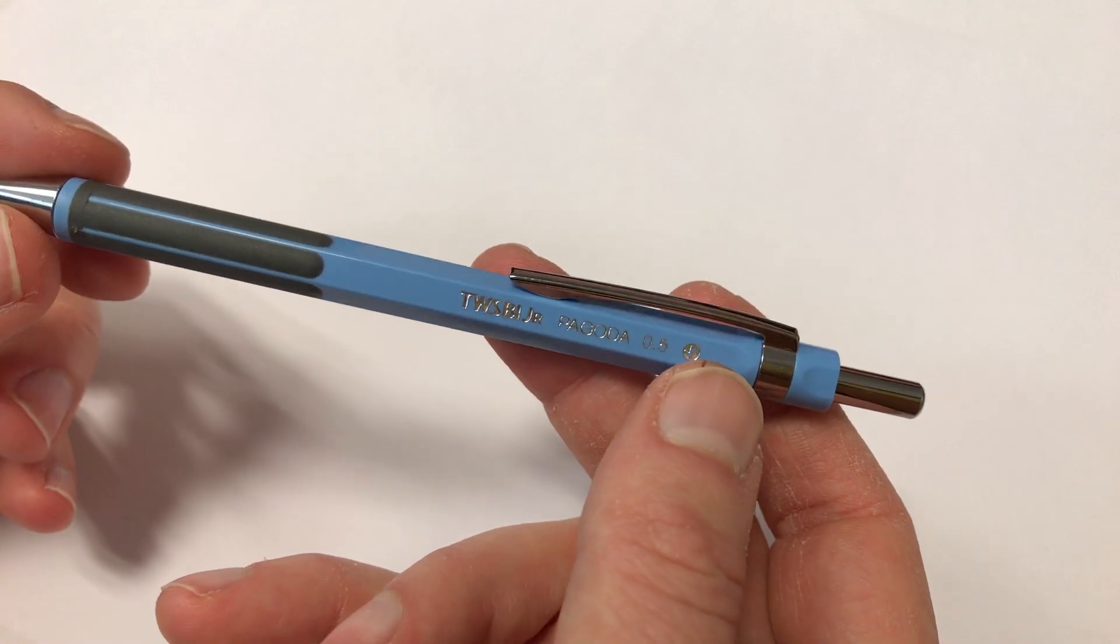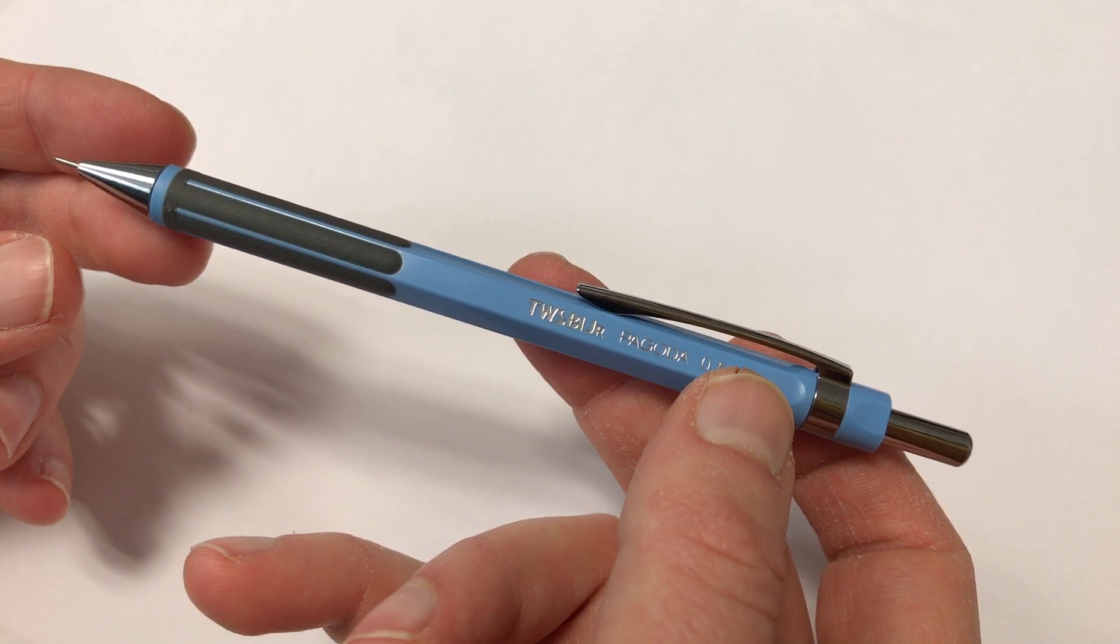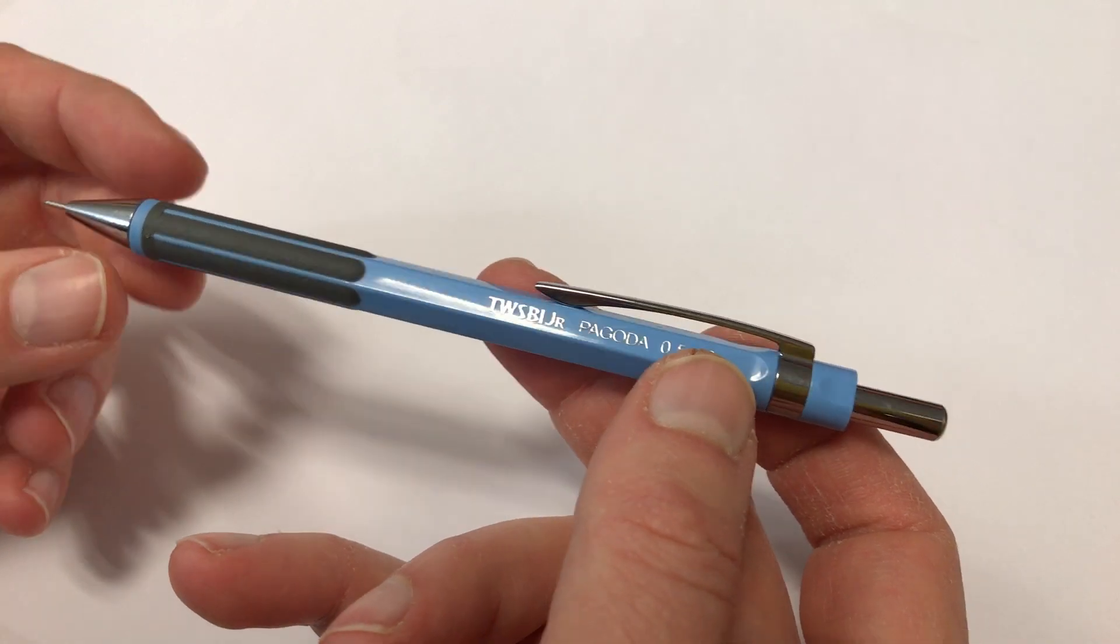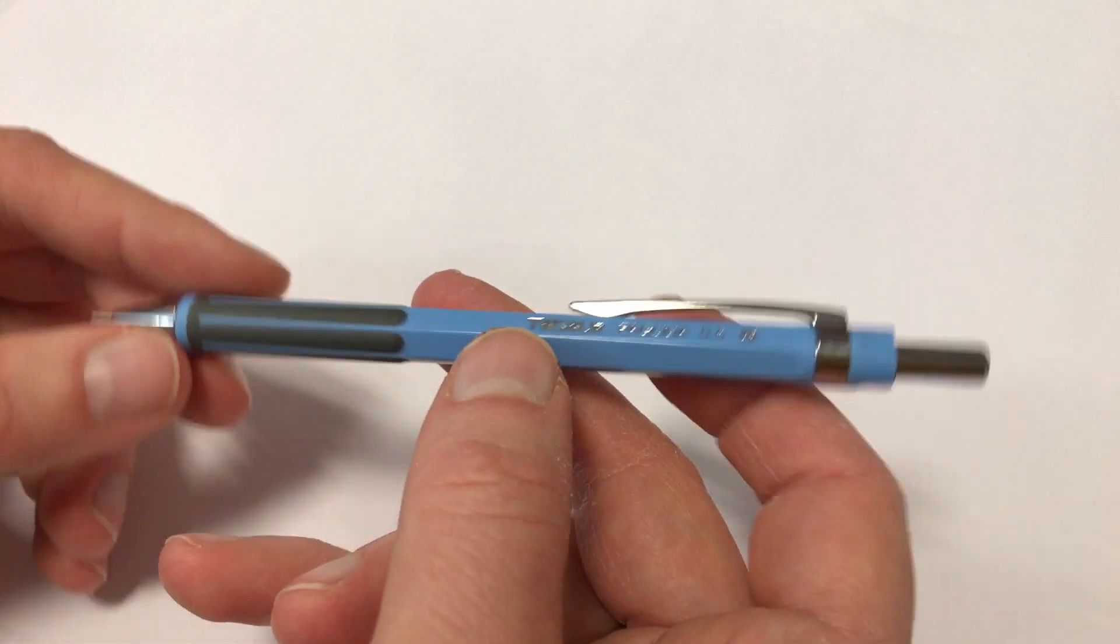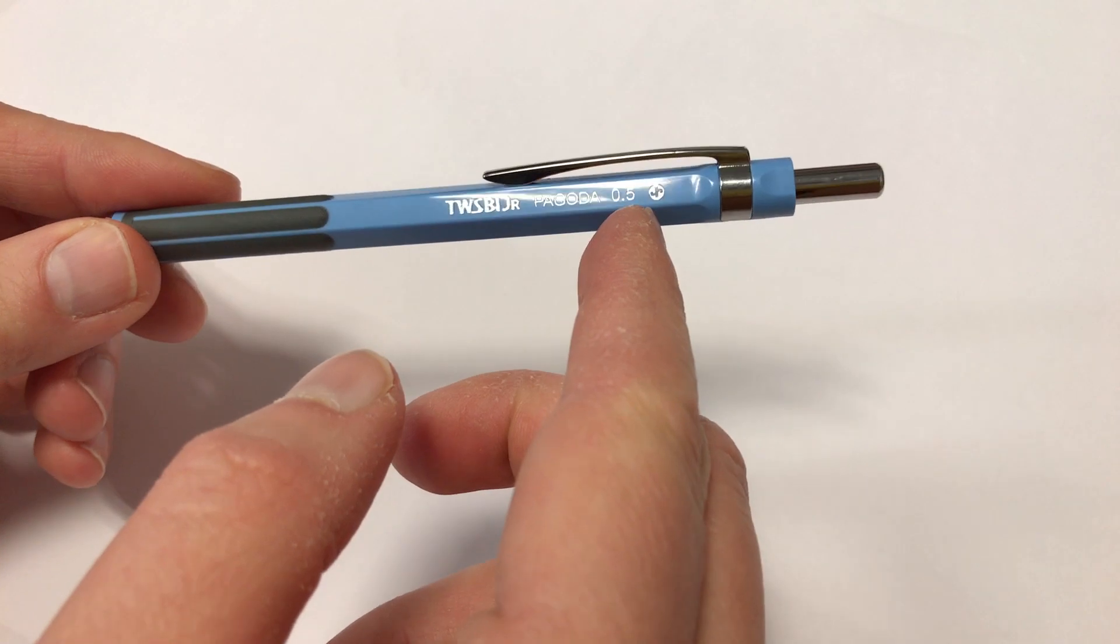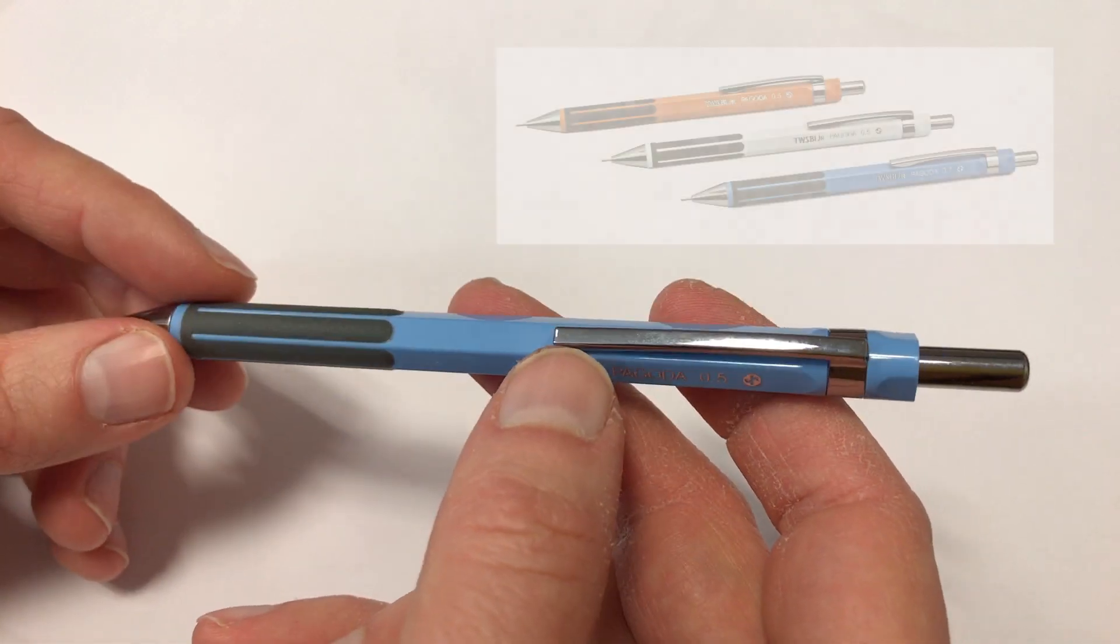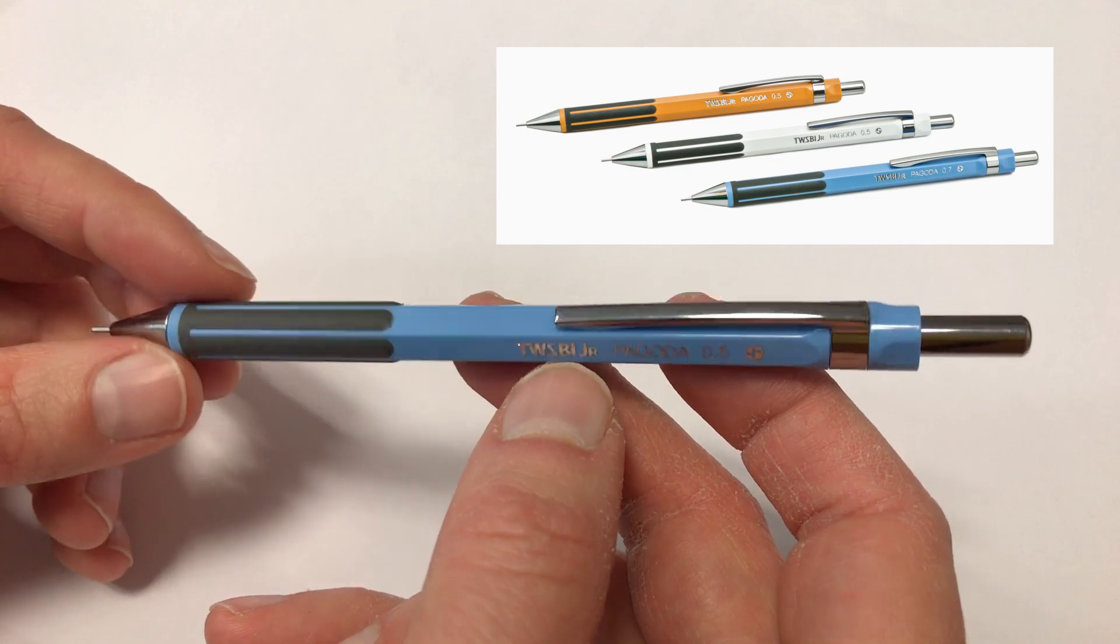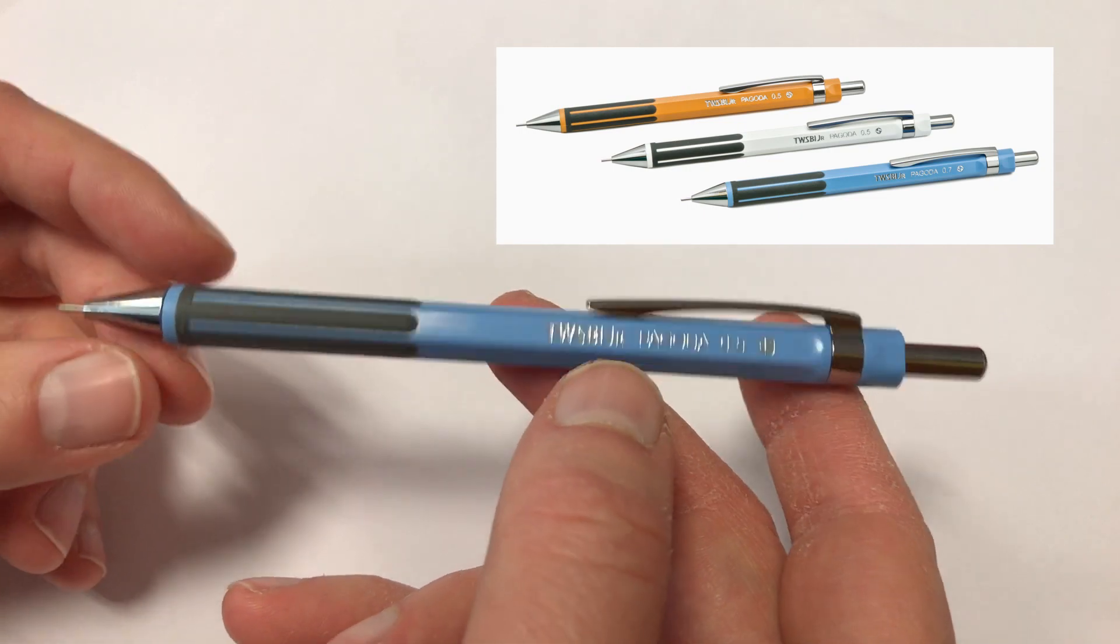So it's from TWSBI - T-W-S-B-I. They've been an OEM manufacturer for decades, and this is the cheapest pencil they offer. In the UK you get it for £3.70, available in 0.5 and 0.7 millimeters. In this grey blue there's also an orange color called Marmalade, and it's also available in white.